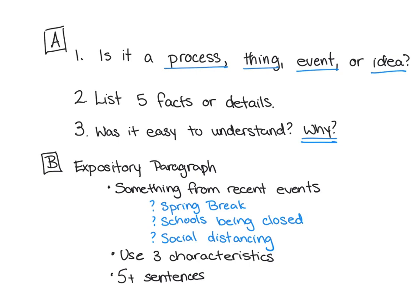For Part B, you'll write an expository paragraph. The book asks you to write about an event that happened in your school or community during the last couple of weeks, but I'm opening up the topic to recent events. Options could include spring break, schools being closed and what that looks like, or a how-to for social distancing and its process — social distancing could also be argued as an idea. Make sure you use the three characteristics: process, thing, event, or idea; facts and details on who, what, when, where, why, and how; and words and images.